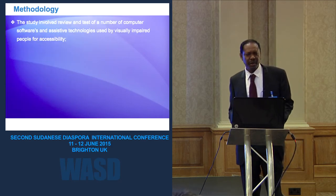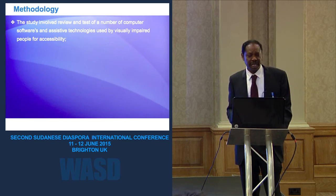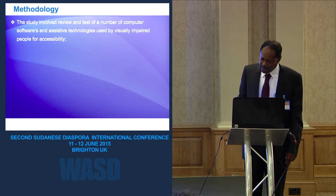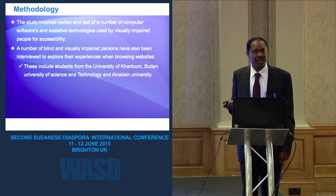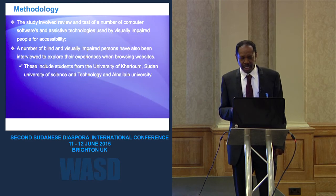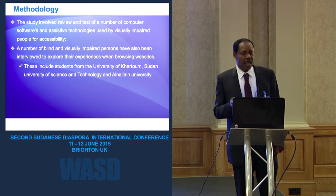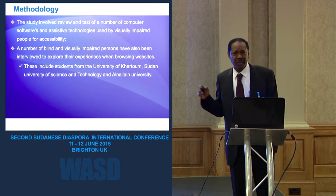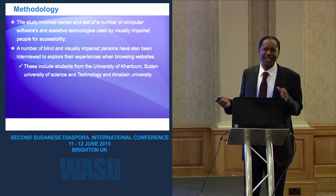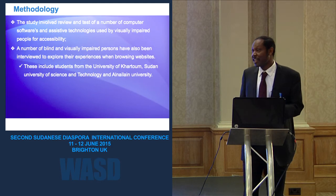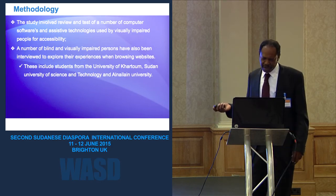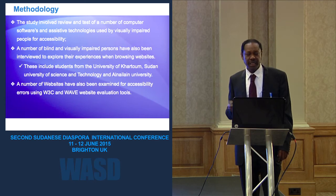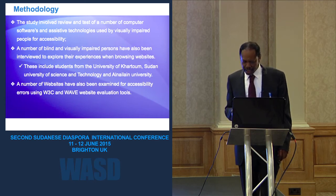The methodology involved reviewing and testing a number of computer software and assistive technology used by visually impaired people for accessibility. A number of blind and visually impaired persons were interviewed to explore their experience when viewing websites. The study included students from the University of Khartoum, Sudan University of Science and Technology, and an e-learning university. All three universities were tested — they have e-learning but their websites are not accessible for blind and visually impaired people, meaning those users cannot actually use the e-learning. Website accessibility errors were examined using W3C and evaluation tools.